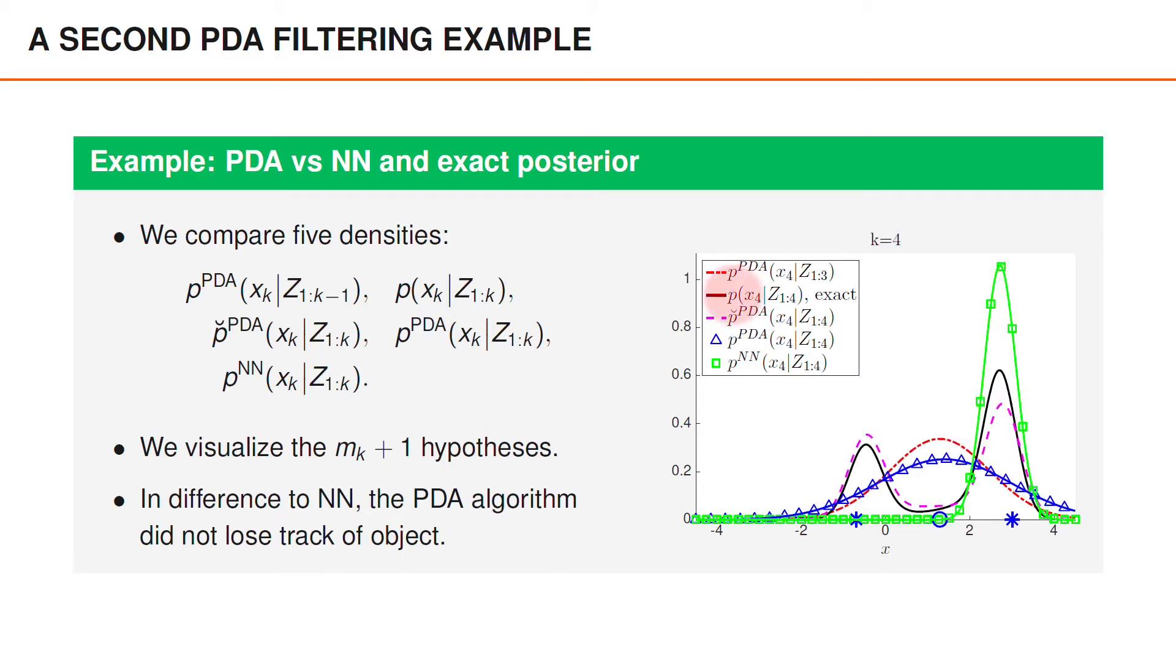At time 4, the true posterior is bimodal, stating that the object state is likely to be either a small negative number or a number close to 3. The nearest neighbor algorithm confidently states that the object is around 3, whereas the PDA filter approximates the posterior using a Gaussian density with a large variance.